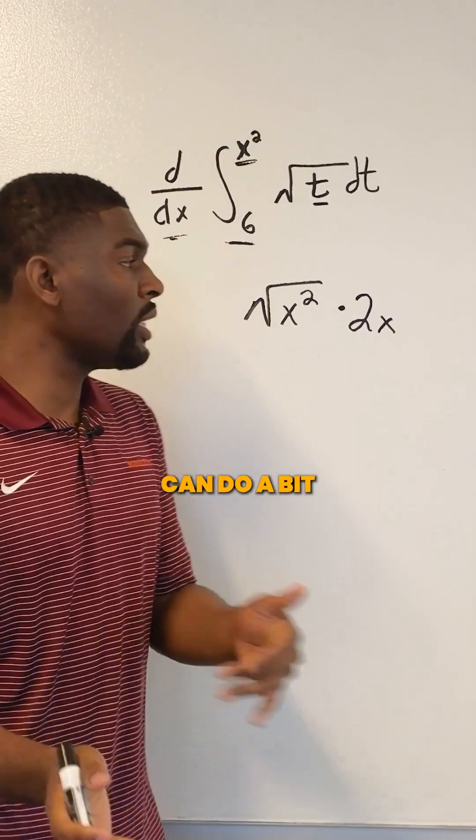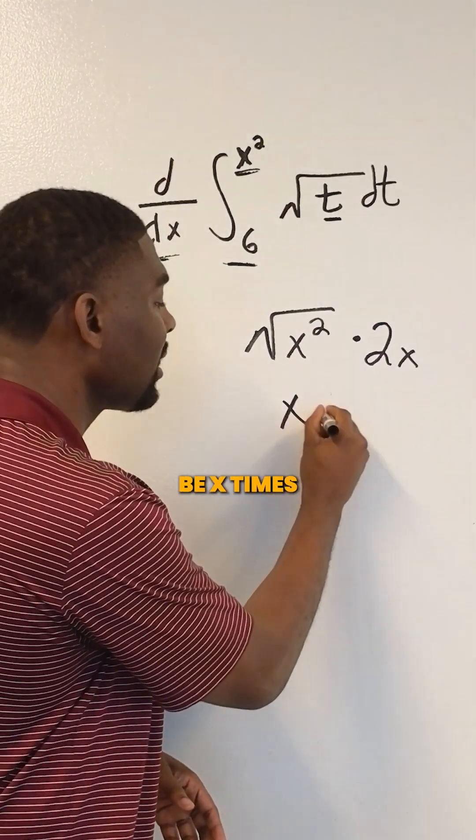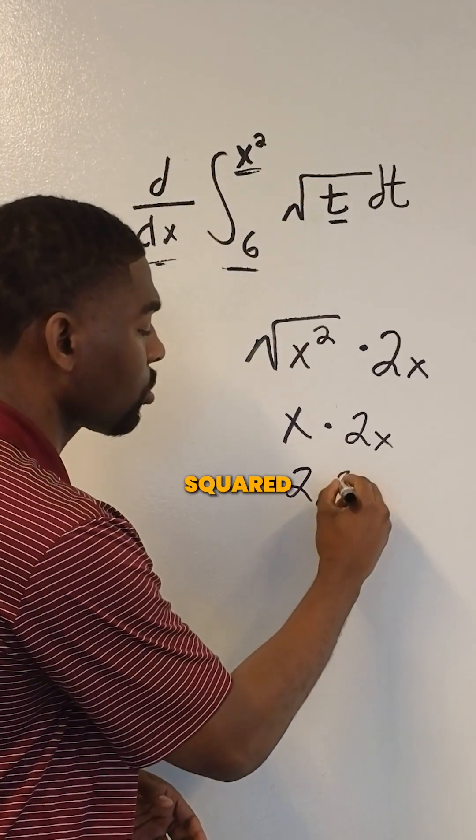At this point, we're not done because we can simplify. The square root of x squared is just x times 2x, and x times 2x becomes 2x squared.